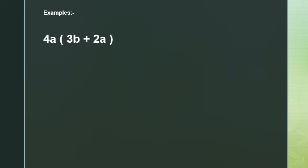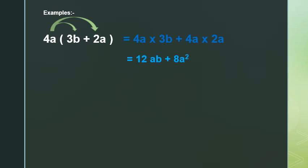For example, 4a by (3b + 2a). We distribute: 4a by 3b, and 4a by 2a. So 4a by 3b: coefficients 4 by 3 equal 12, giving 12ab. And 4a by 2a: coefficients 4 by 2 equal 8, and a to the power 1 times a to the power 1 gives a squared, so 8a squared.